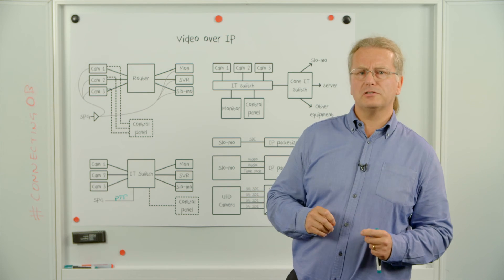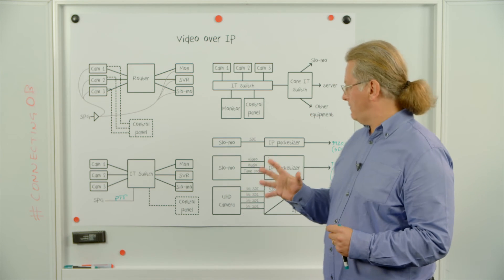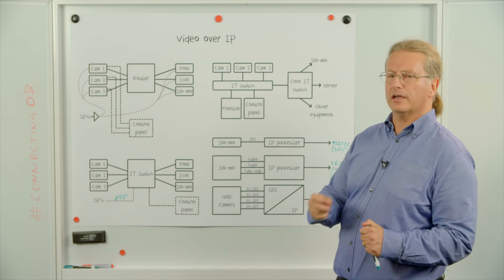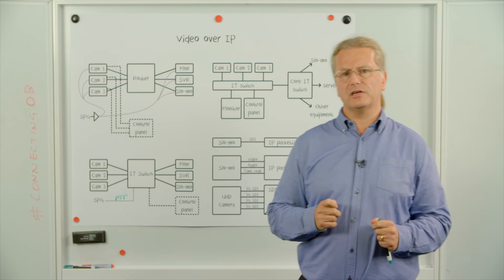A lot of the equipment is specified with 10 gig E connections, which means if you're going to use UHD, which requires 12 gig, you need to slightly compress the signal.